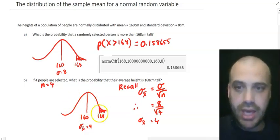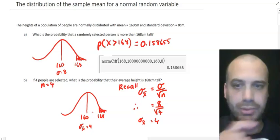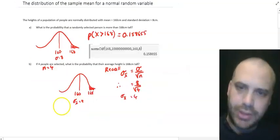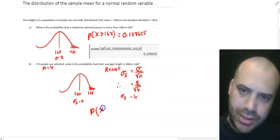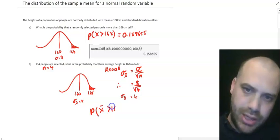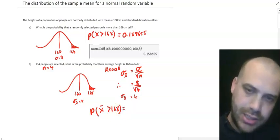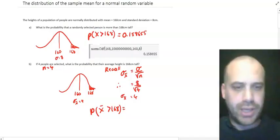Okay. And now we have everything we need to be able to solve this question. So the probability that the sample mean is going to be greater than 168 is going to be equal to. Let's go over to our calculator. All right.